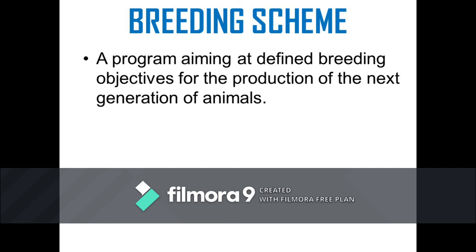Let's describe what a breeding scheme is. Breeding scheme refers to a program aiming at defined breeding objectives for the production of the next generation of animals. Basically, a breeding scheme describes a program or plan as to which animals in the herd will be used in breeding in order to produce progenies or offspring that possess the traits included in the breeding objectives.